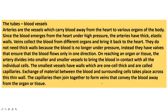Difference between arteries and veins: Arteries carry blood from the heart to various parts of the body; veins carry blood from different body parts to the heart. Arteries carry oxygenated blood; veins carry deoxygenated blood. Blood flows with high speed and high pressure in arteries; in veins it flows with low speed and low pressure. Valves are absent in arteries; valves are present in veins. Arteries are deep seated; veins are superficial. Capillaries join together to form veins that convey blood away from tissues.